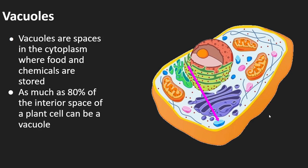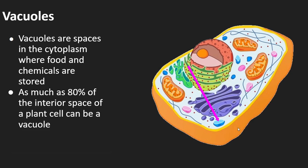Another structure is vacuoles — they are large spaces used to store things. In animal cells, vacuoles are very small and used to store chemicals that the cell needs. In plant cells, vacuoles can be huge. Plant cells tend to store lots of materials, and as much as 80% of the interior volume of a plant cell can be a vacuole. So just keep in mind: vacuoles are like a place to store things.